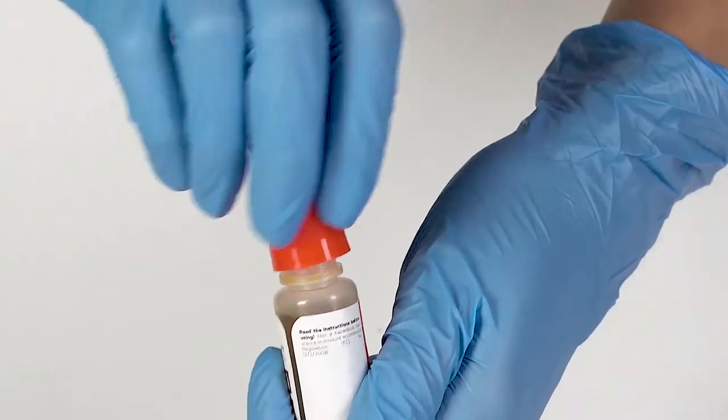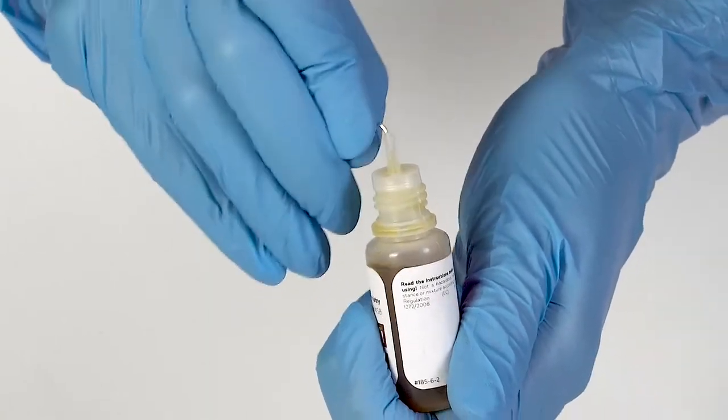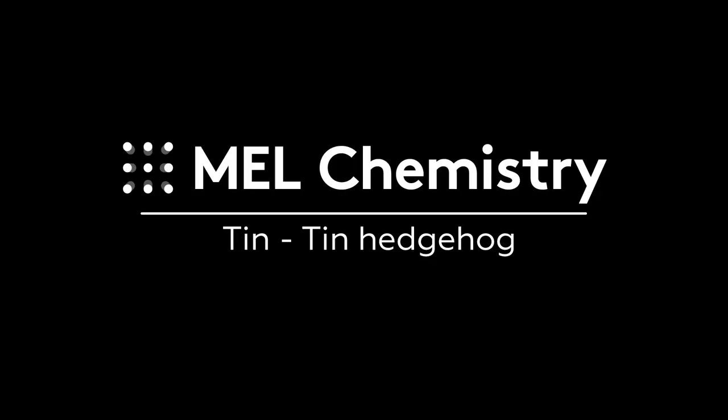To open a bottle containing a reagent, push the cap down and turn it. Pierce the bottle nozzle with an unbent paper clip. For the Tin Hedgehog experiment,